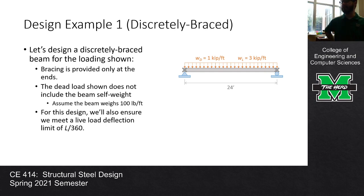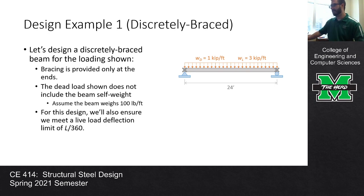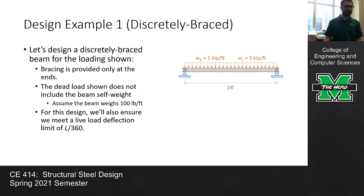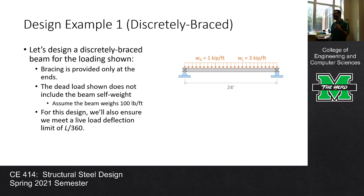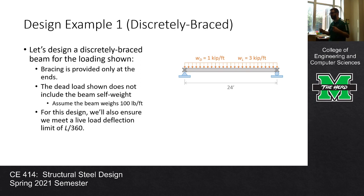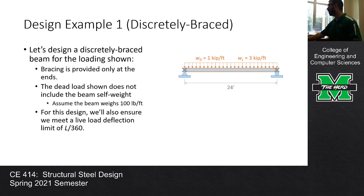We've got a design example - we are going to design this beam start to finish. The beam is subjected to a dead load of one kip per foot and a live load of three kips per foot. The dead load shown does not include beam self-weight, so we need to estimate that. The bracing is provided only at the ends. The beam is 24 feet long, and LB is also 24 feet because we only have bracing at the ends. We'll ensure the beam meets a live load deflection limit of L over 360.